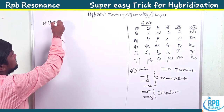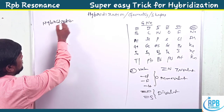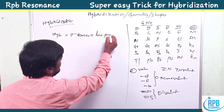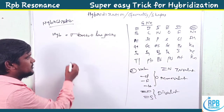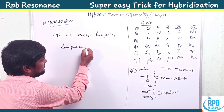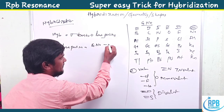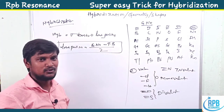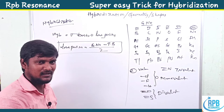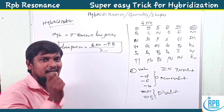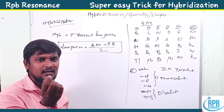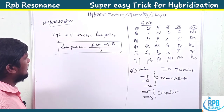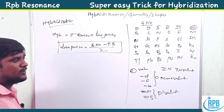Now let's move on to finding hybridization. Simply, hybridization equals the number of sigma bonds plus lone pairs. The lone pairs formula is: lone pairs = (group number of central atom minus total bonds) divided by two. These are the formulas, but I'll give a very simple trick so after watching this video you can find any molecule's shape, hybridization, and geometry within 30 seconds.